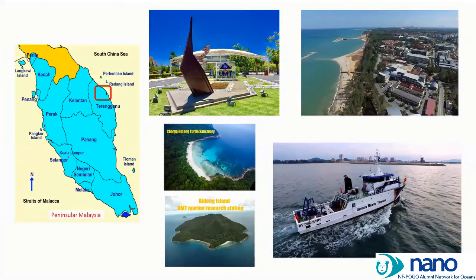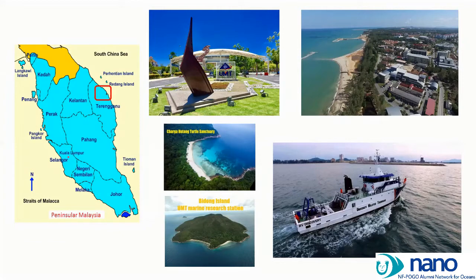I work at University Malaysia Terengganu, which is on the east coast of Peninsular Malaysia. This university is highly focused on marine science study, and we have another name — Marine University. UMT owns one research vessel named RV Discovery. I was there to support the sampling when the RV had its first trip offshore. UMT also owns an island, Redang Islands, as a marine research station.